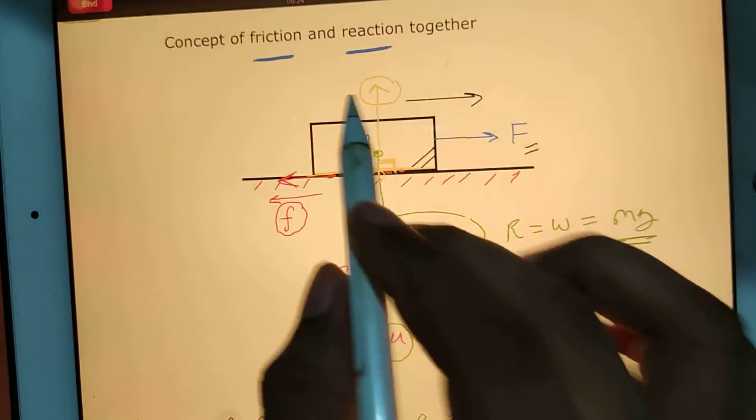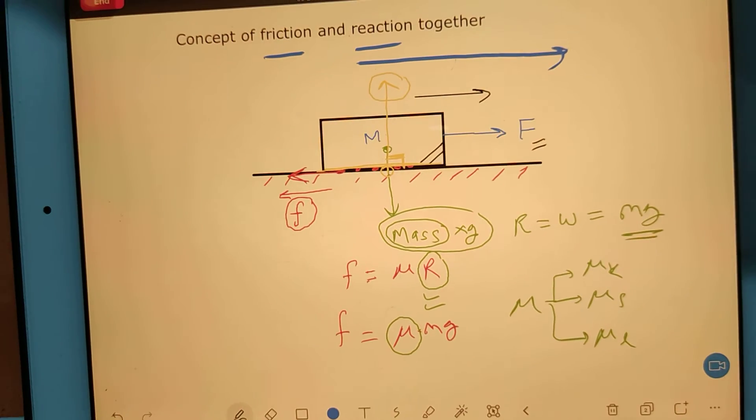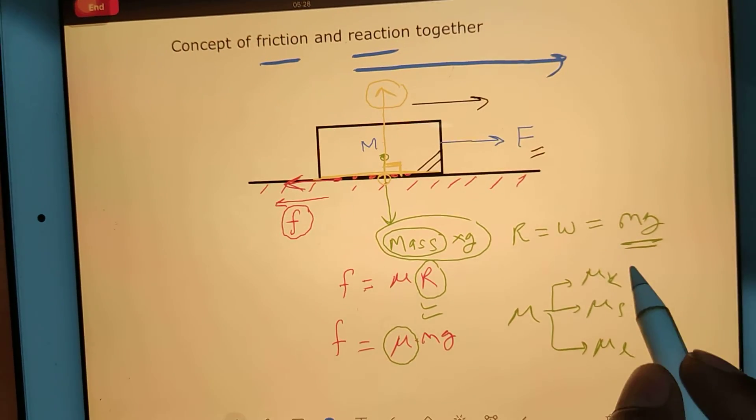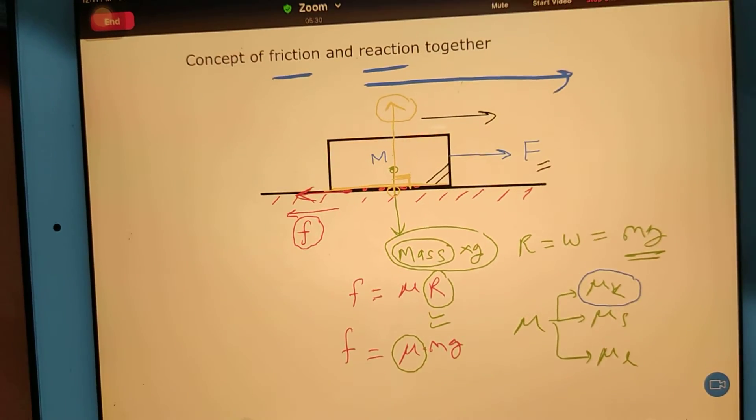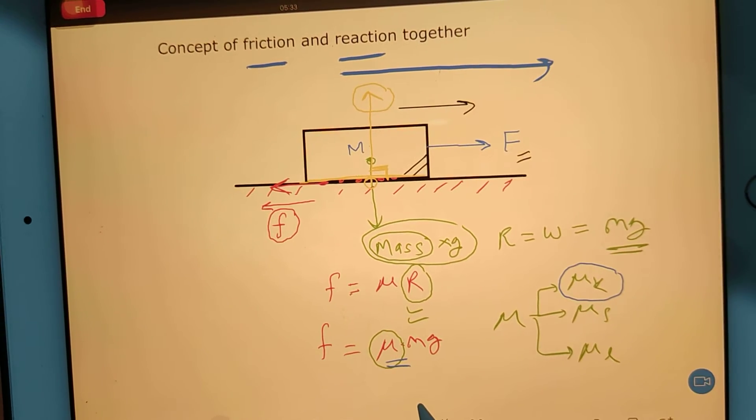Because the block is already in motion, it means kinetic μₖ. So this μ we will replace as μₖ.